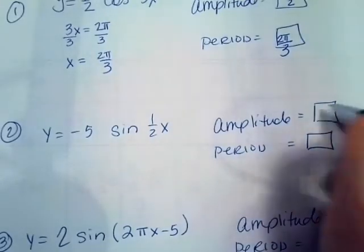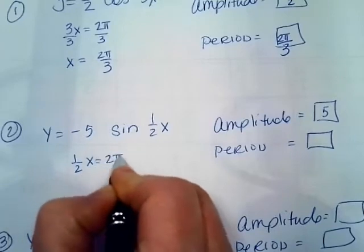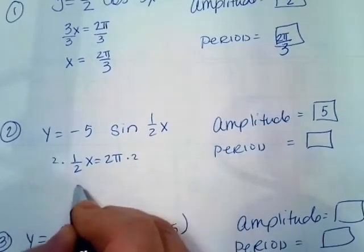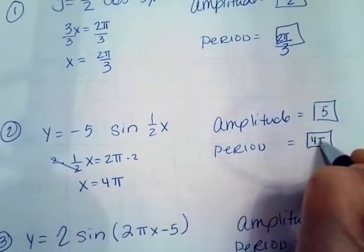The next one has an amplitude of 5. The period, it's 1/2 x equals 2π. I'm going to solve for x, and we're going to multiply by 2 on both sides. So x equals 4π. So that is my period.